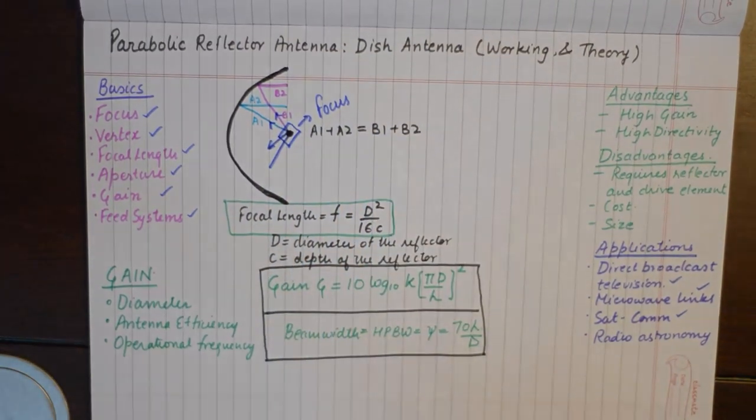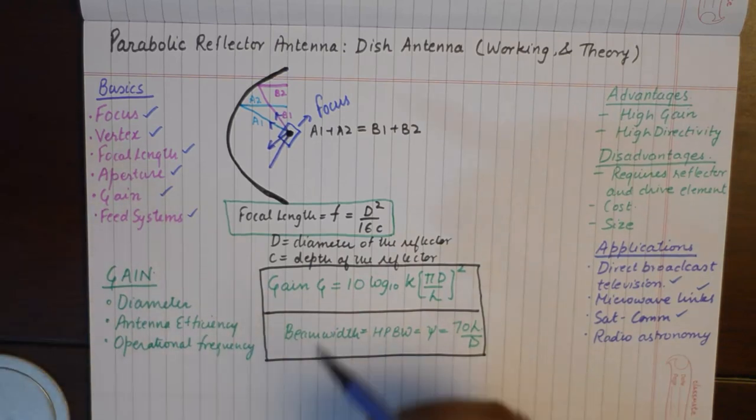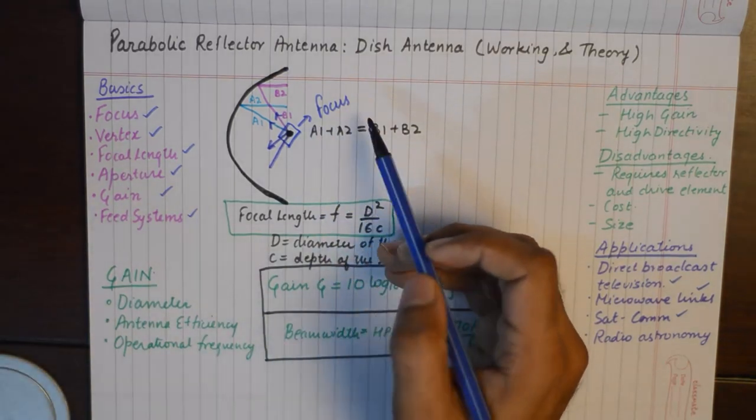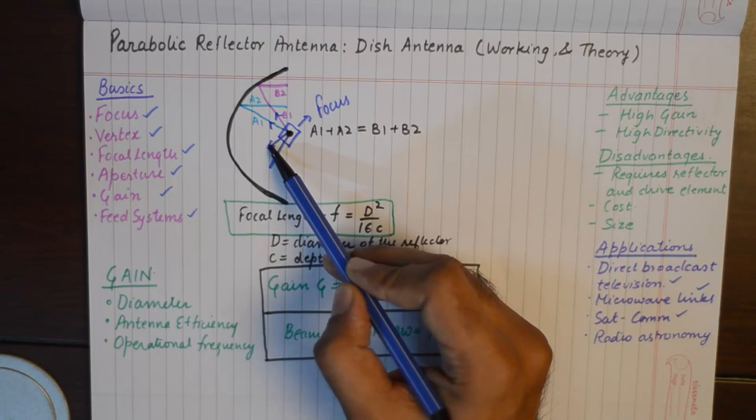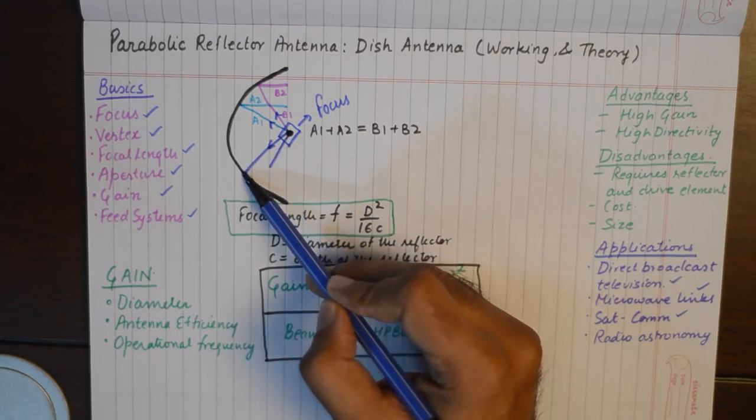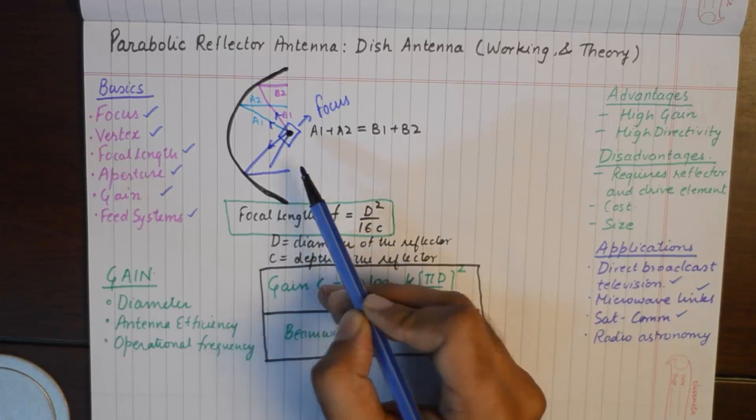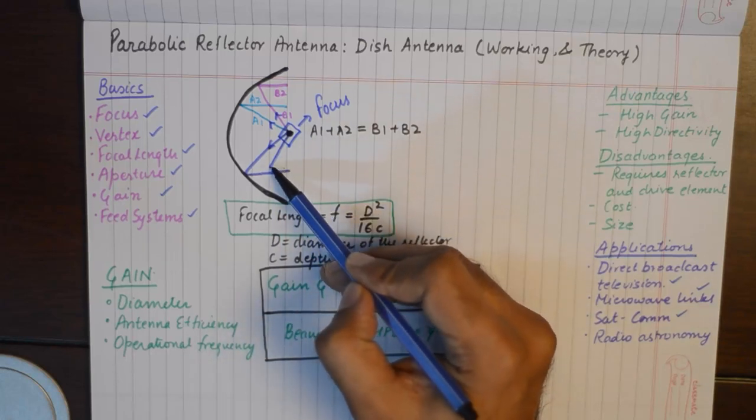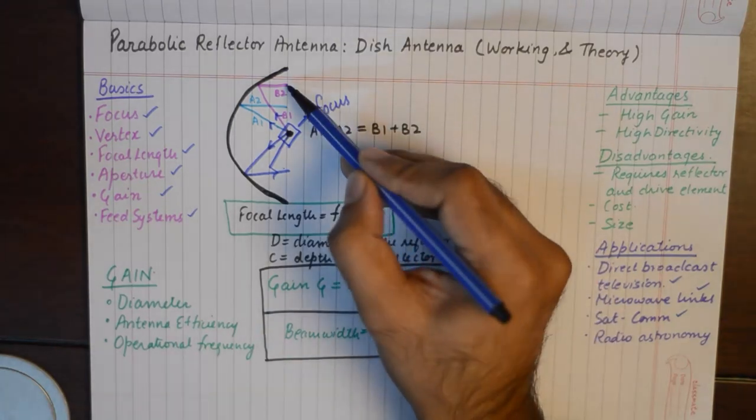All the radiations that are radiated from the antenna placed at the focus are reflected back from the surface of the parabolic antenna.